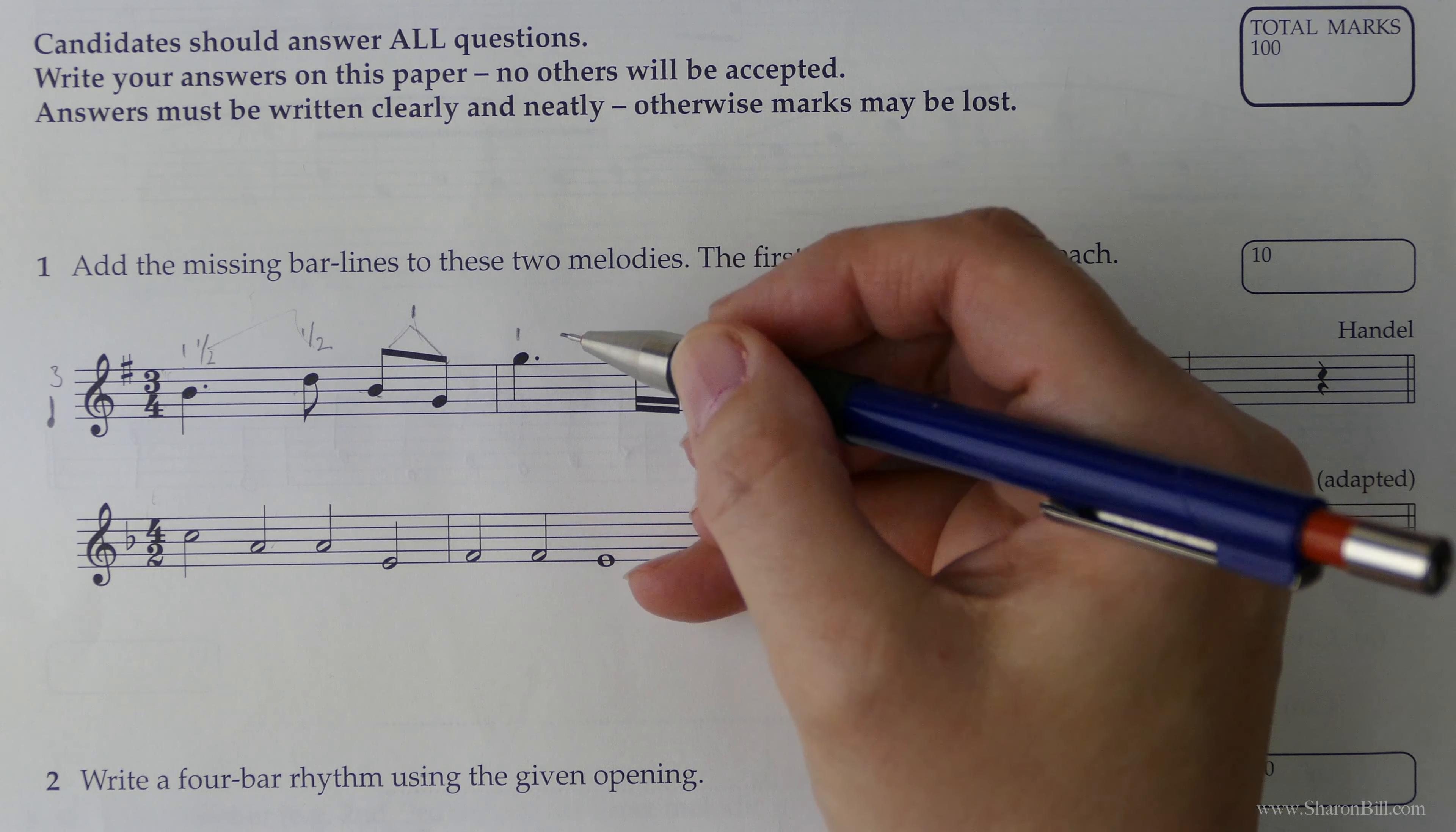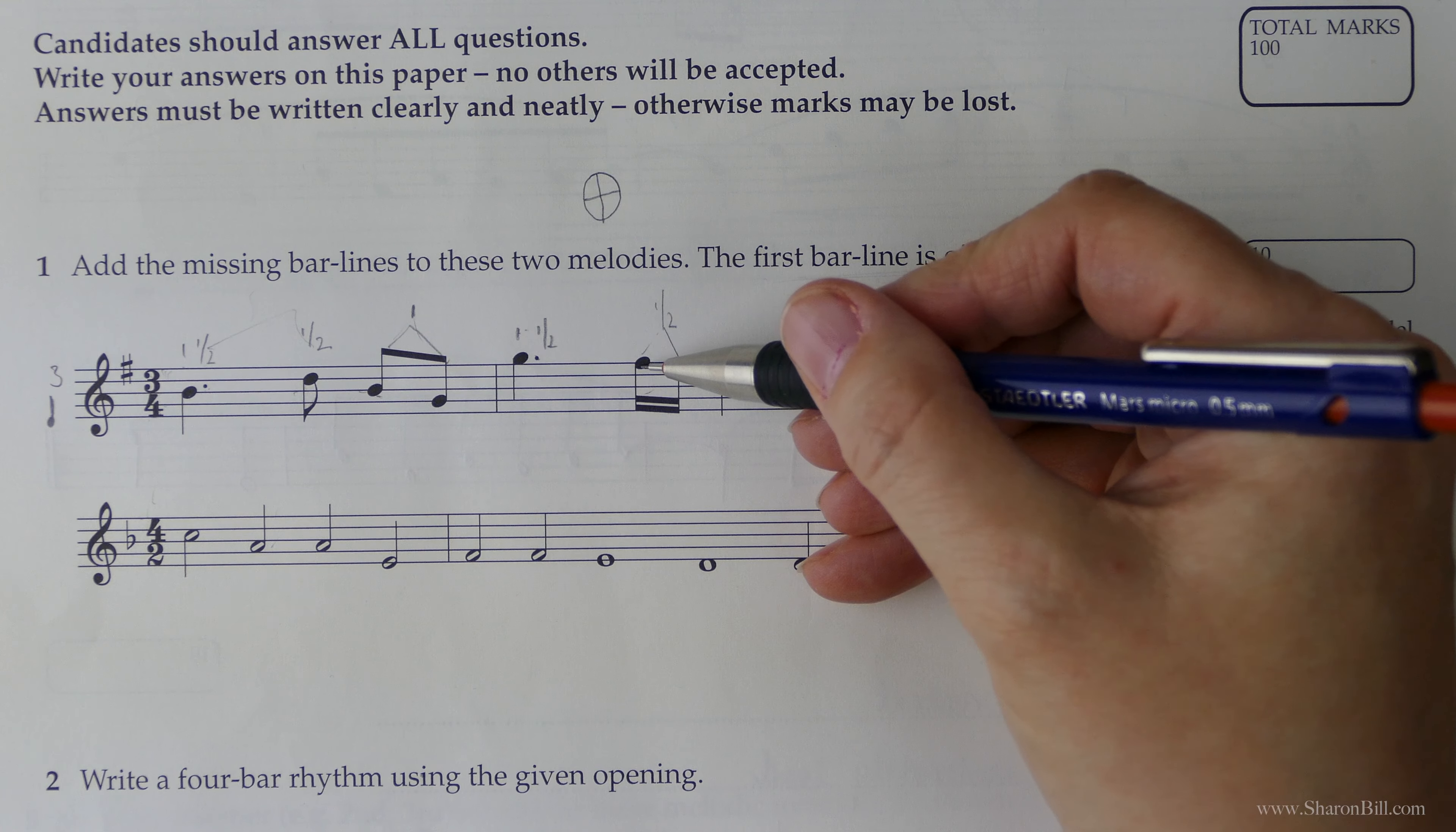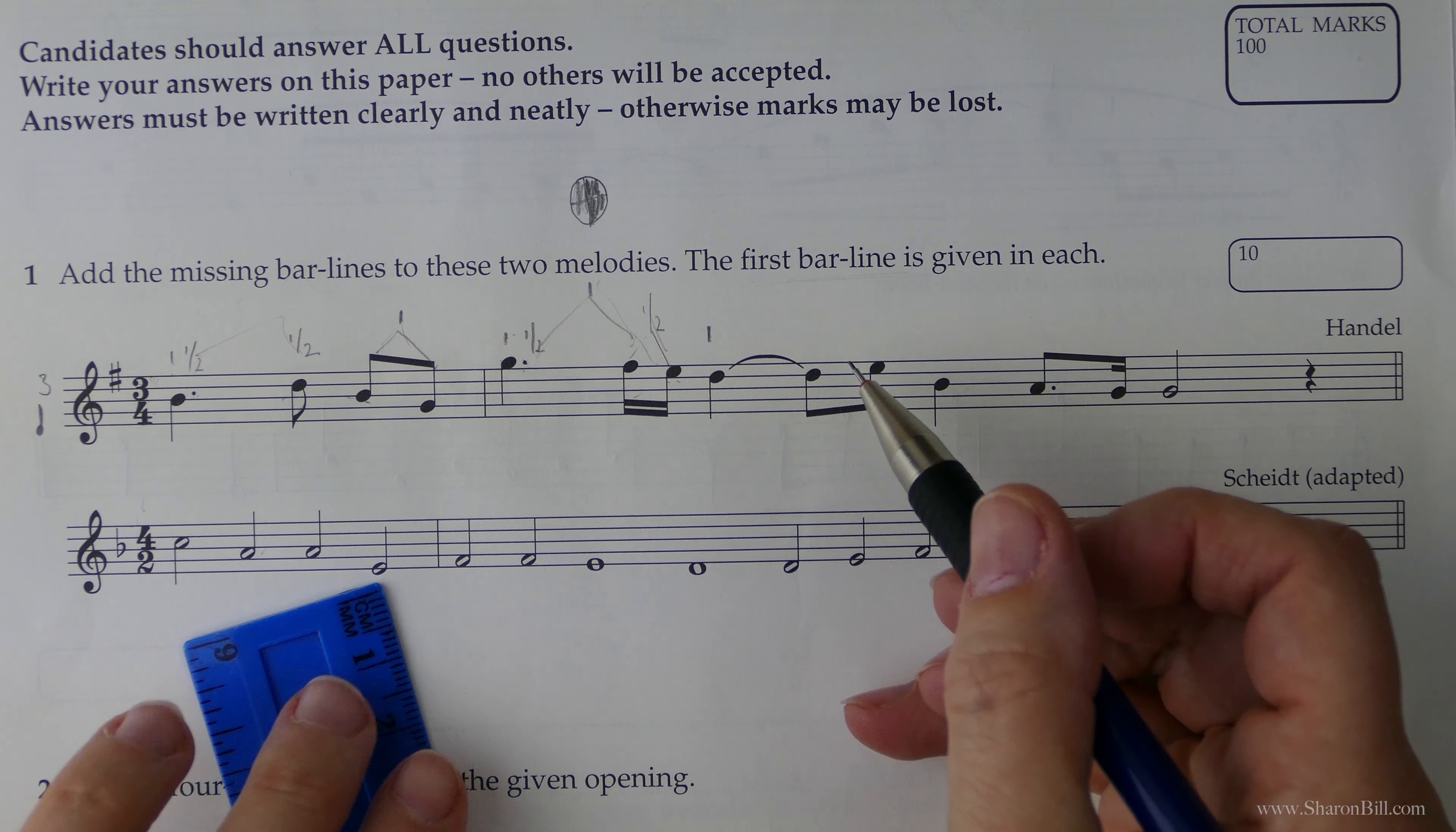So we've got one beat here, the dot after the note makes it half as long again so half of one is a half so we've got one and a half. Now these semiquavers or sixteenth notes are worth a quarter of a crotchet beat so we've got a quarter and a quarter which gives us a half. Now if you get stuck with your maths I find it easier just to visualize there's my crotchet beat and I'll divide that into halves and quarters. So we can see that we've got a quarter of a beat here and a quarter of a beat here that gives us a half. So we've got one beat here, one beat with this combination of the dot and the semis so that now makes two, and then we've got one beat here with this crotchet beat, this quarter note, so that makes three and so there's our bar line just underneath that tie.